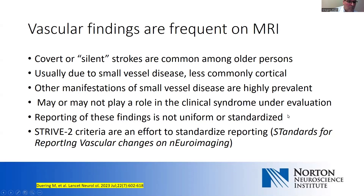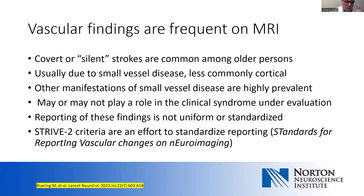One challenge is that reporting of these findings is not uniform and not standardized. Reports typically say mild to moderate, severe, more than expected for age, less than expected for age — vague descriptive terms that are really not very helpful. There is a consensus group trying to standardize reporting of vascular changes on MRI: the STRIVE2 group — the second iteration of trying to standardize how particularly small vessel changes are reported on neuroimaging reports from radiologists.